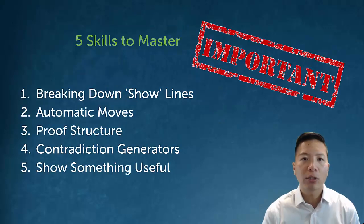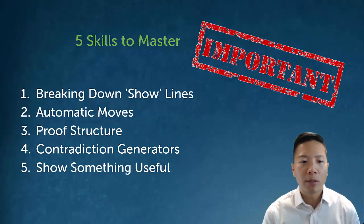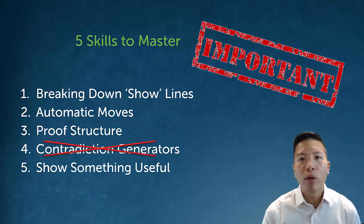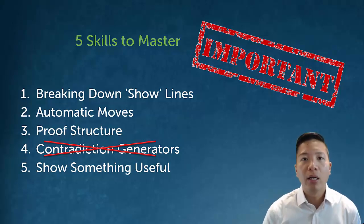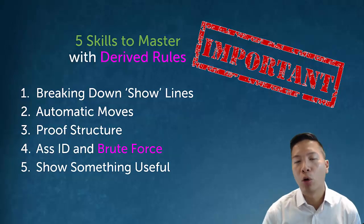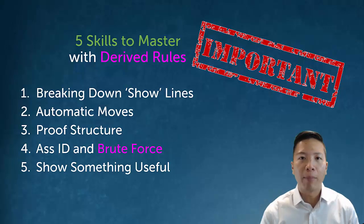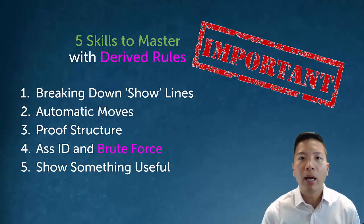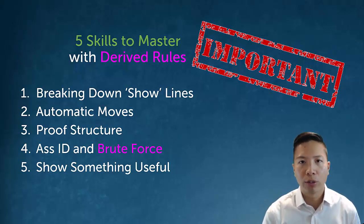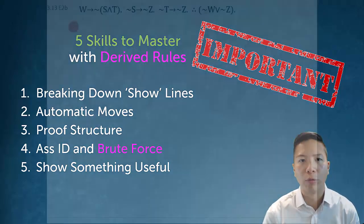So when we go back to our five skills to master, how do the derived rules help us? Well, the key is the derived rules help us with step four. We don't have to worry so much about contradiction generators anymore. Instead, we can just power through — or what I like to call use brute force — and open up a negation of something using our negation rules. We don't need to look for contradiction generators nearly as much; we can just power through the proof.